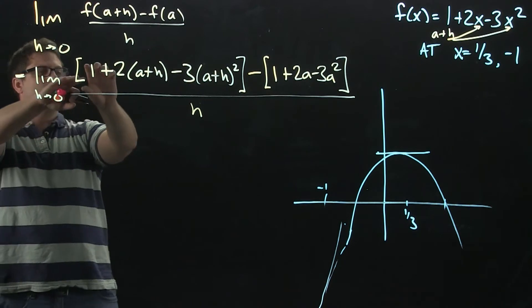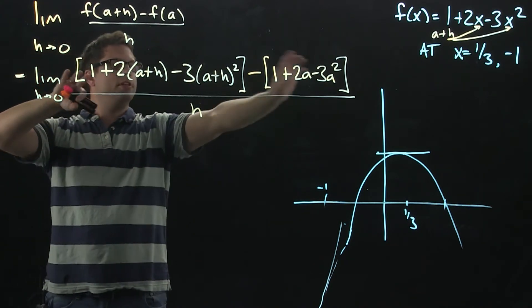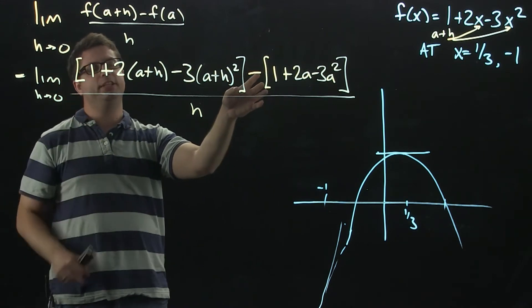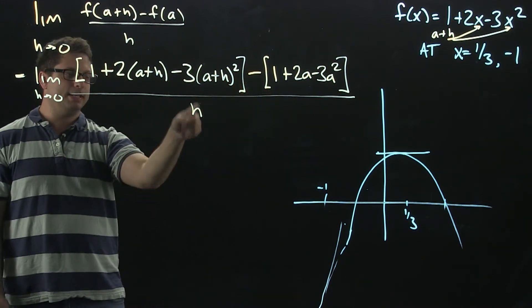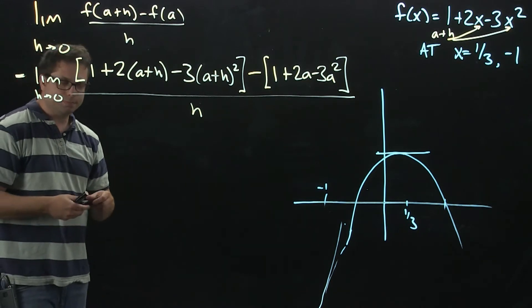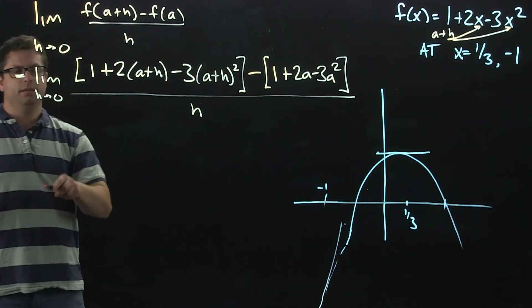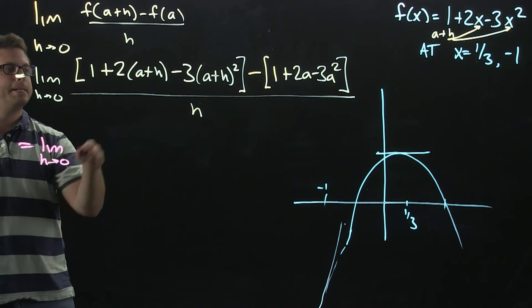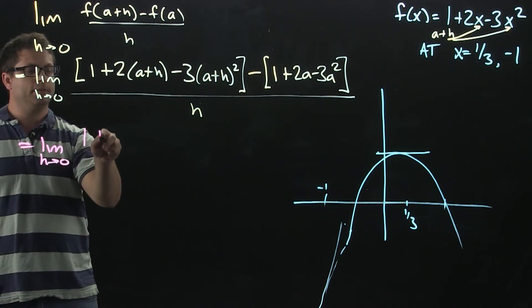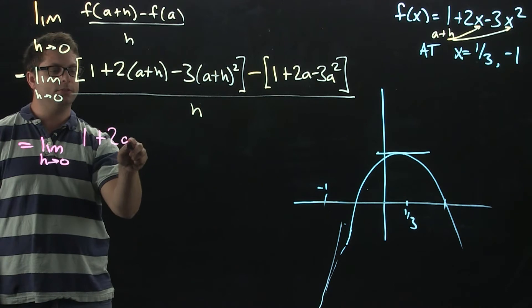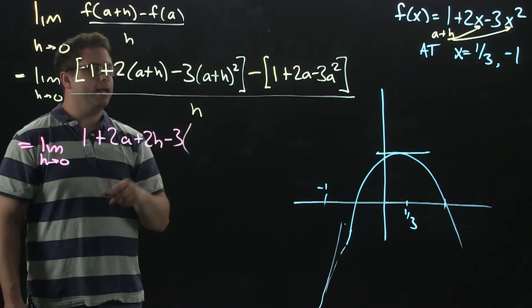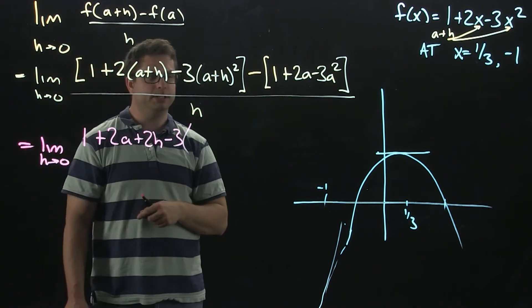My job is to then distribute all of this out, collect like terms, cancel stuff, hoping that every term on top has an h that I can factor out, cancel with that h. So, that's our goal. So, here we're going to get 1. I'm going to distribute the 2. That's 2a, 2h, minus 3.